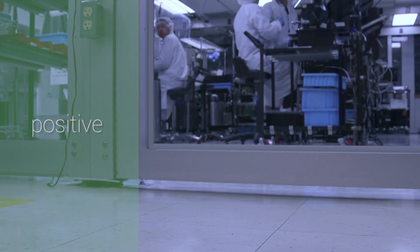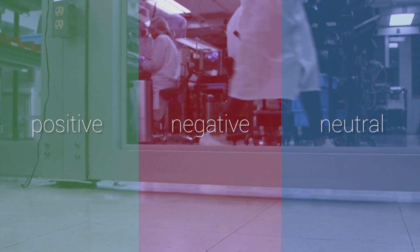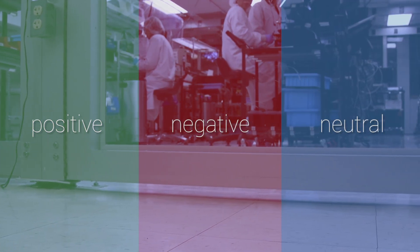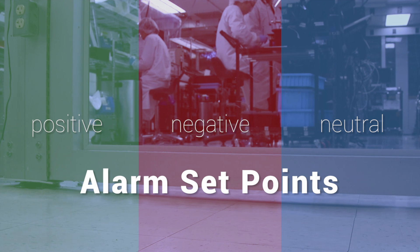For critical environments, the space being monitored can be a positive, negative, or neutral space. The user determines what kind of space is monitored with the alarm set points.